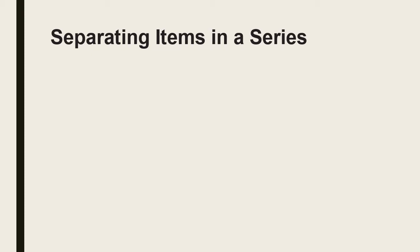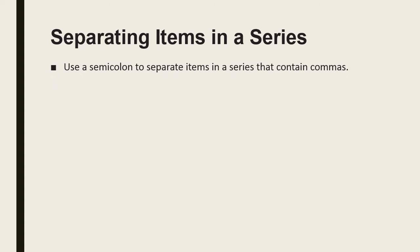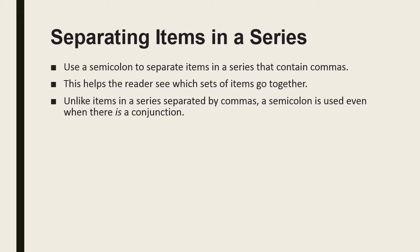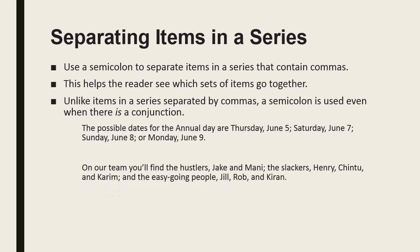Semicolons can also be used to separate items in a series or list that already contain commas, because this helps the reader see which set of items go together. Unlike items separated by commas alone, a semicolon is used even when there is a conjunction present.